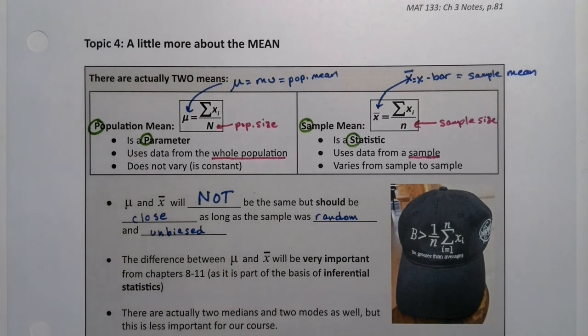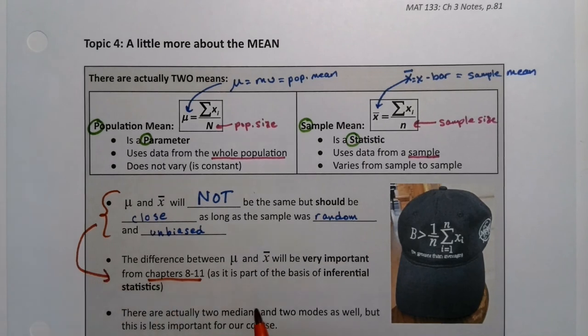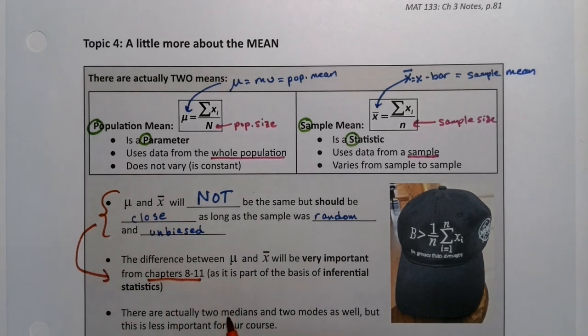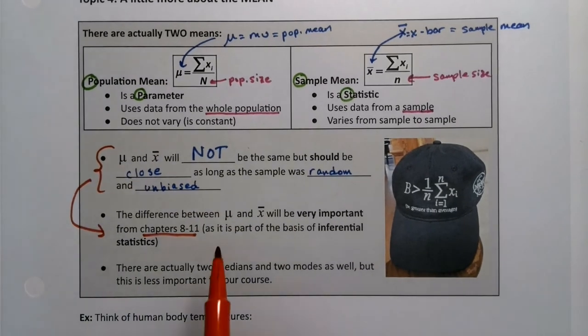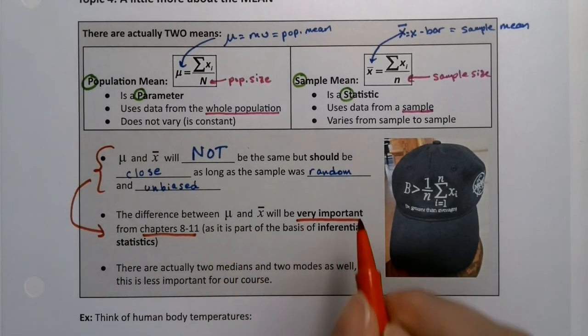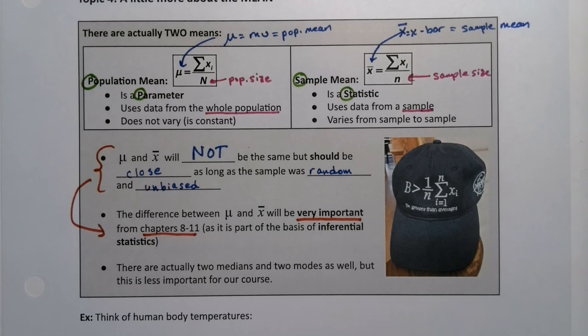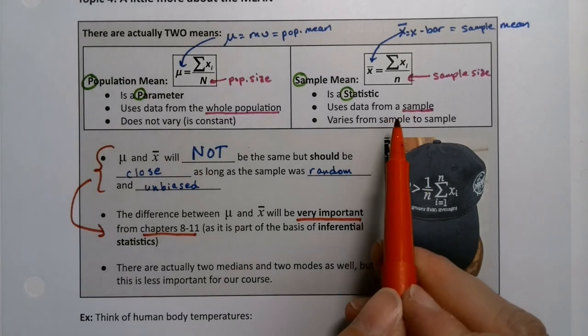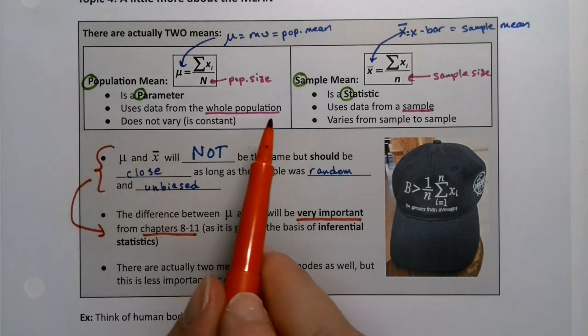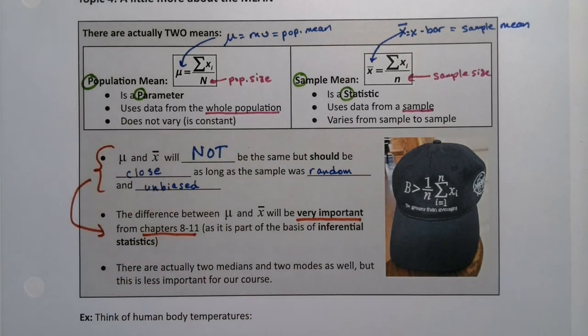So you want it to be random and unbiased. And that right there, this idea right here, that is the basis of chapters eight, nine, ten, eleven. We stop at eleven, but it will go on. That's a very big deal. It's very important. I really can't stress it enough. It's the beginnings of inferential statistics. That those two values are not the same. This changes from sample to sample. This is constant. They're not the same, but they should be close. Now there's nothing really particularly special about mean other than we use it all the time. There are actually two medians, a sample median and a population median and two modes as well. But those we don't use for our course.